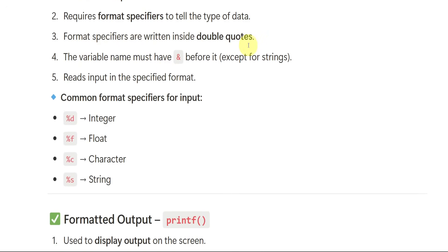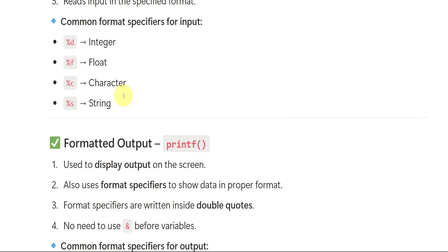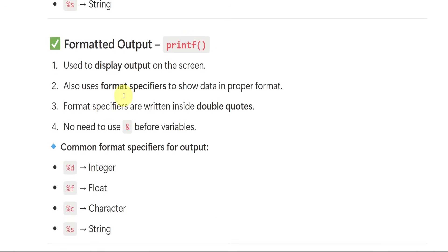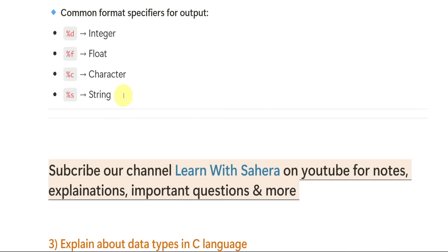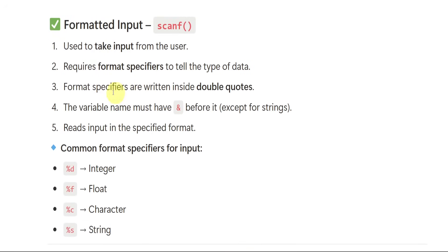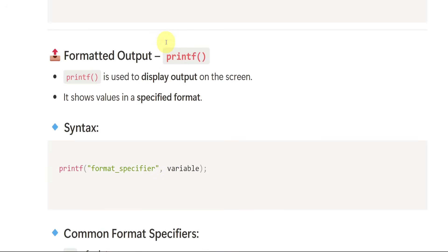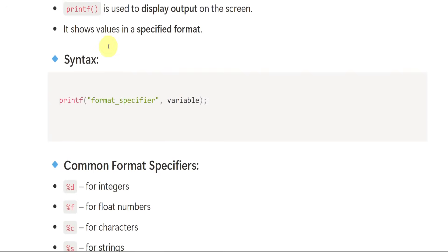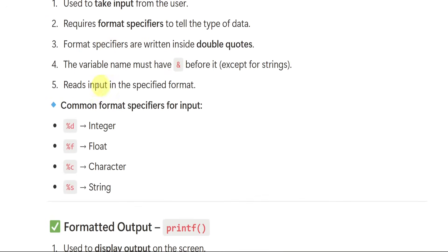Both scanf and printf use format specifiers to handle different types of data. Format specifiers must be written inside double quotes — this is very important. The variable name must have an ampersand (&) before it in scanf. It reads input in the specified format. For format specifiers like %d, you will be getting marks — make sure you write them.